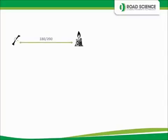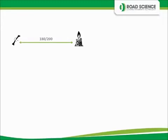When we characterise our bitumen, we're very interested in its low temperature properties and its high temperature properties. When I say low temperature properties, we're talking about brittle fracture — that's where the bitumen gets so cold that it breaks. In terms of high temperature properties, we're interested in the temperature where it starts to melt.